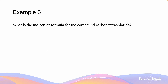For these questions we are now determining the molecular formulae given a compound's name. Carbon tetrachloride is going to be a covalent substance since there are no metals. Since there is no prefix for carbon, that indicates there is one carbon, and the tetra indicates there are four chlorines. So the molecular formula is CCl4.